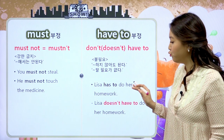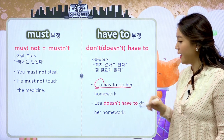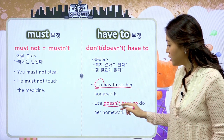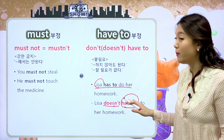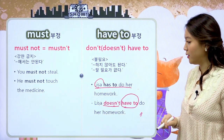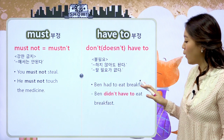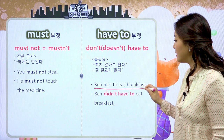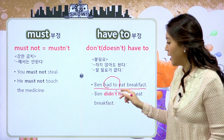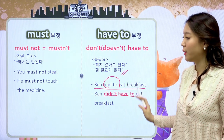3인칭 단수일 경우 'Lisa has to do her homework'를 부정하면 doesn't로 부정이 되고, 얘가 부정을 해주었으니 have to가 원형으로 돌아와야 된다. 우리 일반 동사 부정 배울 때 같은 규칙을 적용했어요. 그래서 'Lisa doesn't have to do her homework.' 리사는 숙제를 하지 않아도 된다 — 불필요 의미를 가지고 있다. 과거는 'Ben had to eat breakfast'의 부정으로 'Ben didn't have to eat breakfast' — 아침밥을 먹지 않아도 상관이 없었다라는 불필요의 의미를 역시 가지고 있습니다.